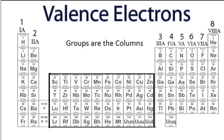So remember, the group number is the number of valence electrons. Sometimes you'll see that group 3 has a 1 in front of it — it's called 13, and we have 14, 15, 16, 17, and 18. You can still just think of this as 3 valence electrons, 4, 5, and so on. It's just another way that you see it written.